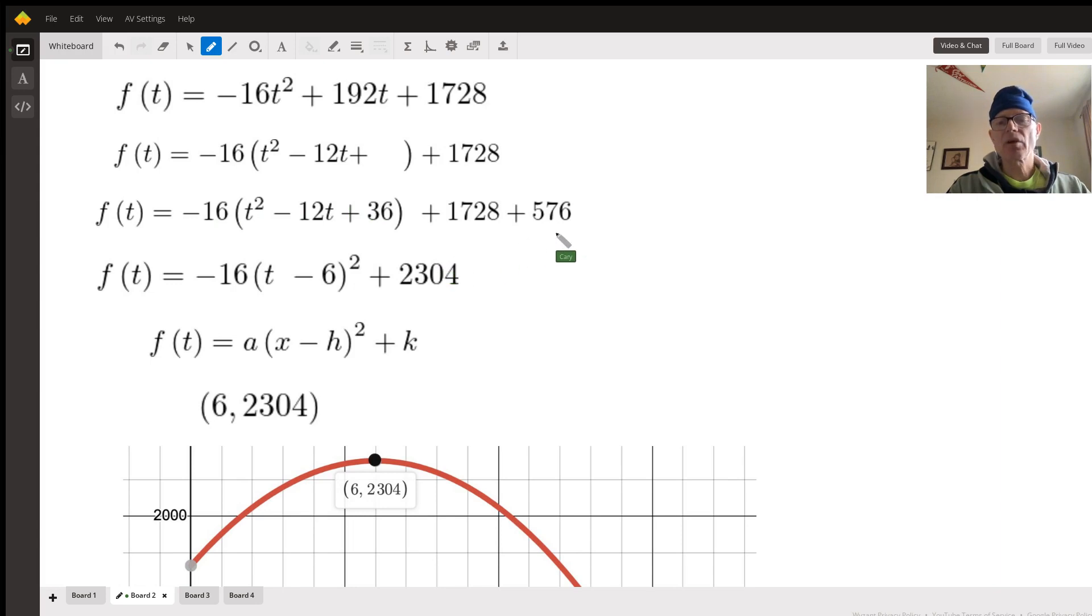We're adding negative 576 over here, we're adding positive 576, so the net effect is adding nothing. We're just changing the appearance of the equation. Now, this is a perfect square trinomial, which we know because half of negative 12 is the same thing as the square root of 36. So now we know that we can write t minus 6 in here and make it squared, because if we were going backwards, we'd end up, in squaring this binomial, we would get this trinomial.